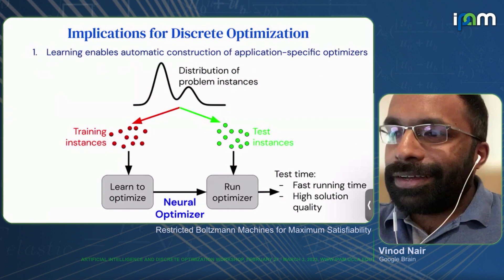So what does that imply for discrete optimization? With deep learning, it becomes possible to learn very application-specific heuristics or search algorithms directly from the data for that application. Every application is characterized by some distribution of problem instances, and you can draw samples from it as training data. You can then construct an optimizer or search algorithm that's hyper-specialized for just that distribution — a meaningful advance over off-the-shelf algorithms with only a few knobs to customize them.